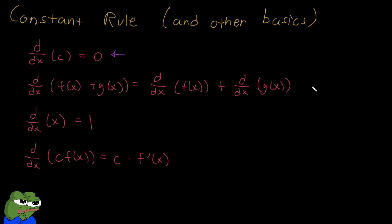This next line says that if you take the derivative of an expression made up of two different terms, you can actually take the derivative one by one. So you can tackle one term first, and then just take the derivative of the next term, and so on and so forth.